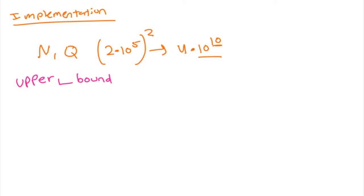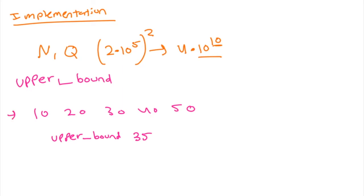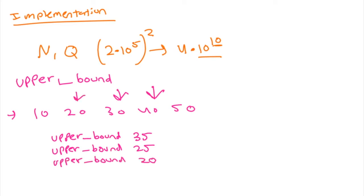We can use the upper_bound function. This function returns an iterator pointing to the first element greater than the query value in a sorted list. For example, given the array [10, 20, 30, 40, 50], the upper bound of 35 points to 40 (the smallest element greater than 35). The upper bound of 25 points to 30, and for 20 it points to 20. The runtime of upper_bound is logarithmic, so we avoid an O(n²) solution.